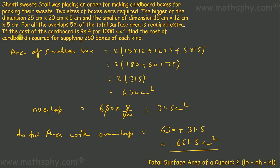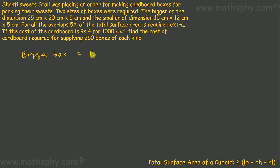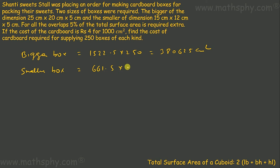The question asks for the cost of cardboard for 250 boxes of each kind at Rs.4 for 1000 cm². Cardboard for 250 bigger boxes: 1522.5 × 250 = 380,625 cm². Cardboard for 250 smaller boxes: 661.5 × 250 = 165,375 cm². Total cardboard required: 380,625 + 165,375 = 546,000 cm².